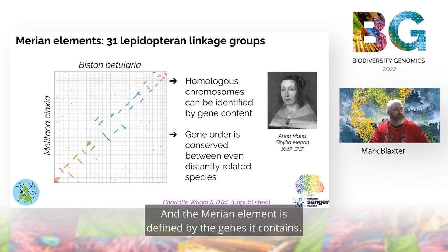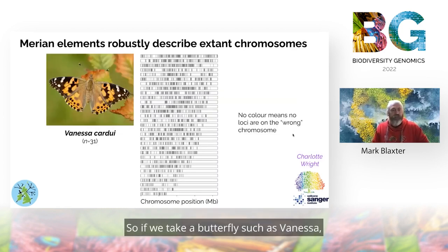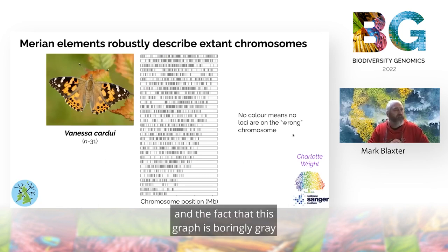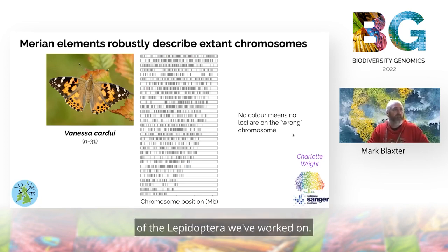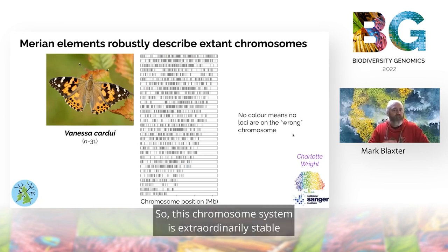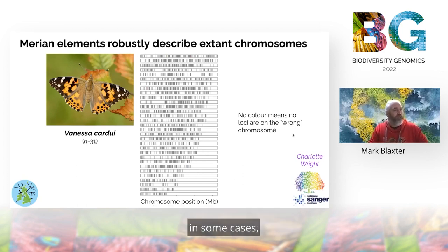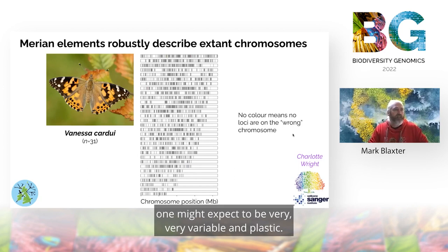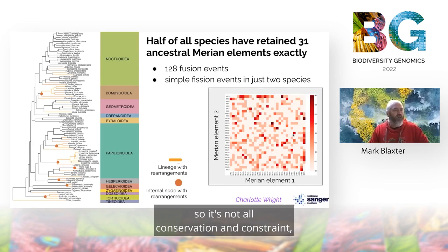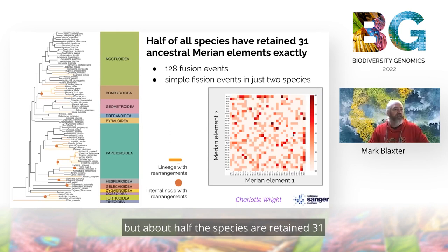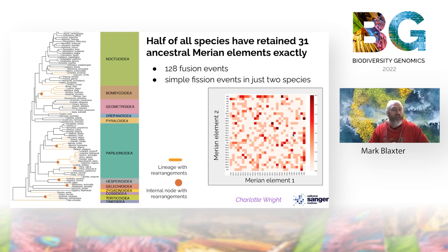If we take a butterfly such as Vanessa, the boringly gray graph means that all chromosomes are made up of sets of genes which have traveled together since the last common ancestor of the lepidoptera we've worked on. This chromosome system is extraordinarily stable in some cases, despite the fact that with holocentric chromosomes one might expect it to be very plastic. There are fusions and fissions, so it's not all conservation and constraint — about half the species have retained exactly 31 ancestral Merian elements. There have been 128 fusion events and simple fission events in just two species.